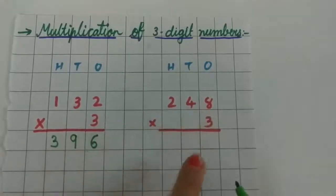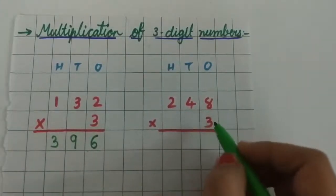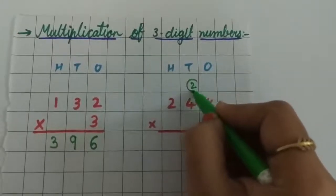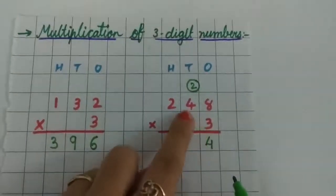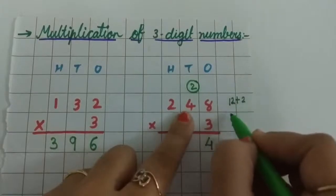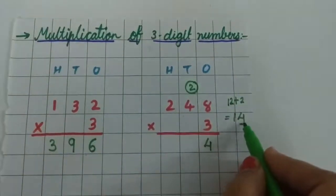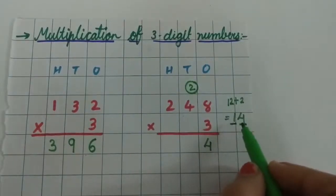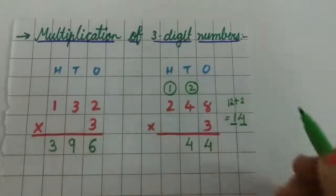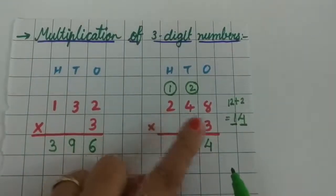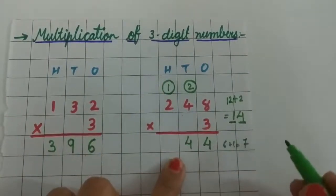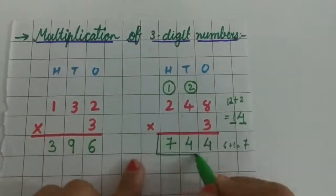Next, 248 multiply by 3. 3 eights are 24. So write 4 below the 1's place column and carry over 2. 3 fours are 12, plus 2 is 14. Write 4 below the 10's place column and carry over 1. 3 twos are 6, plus 1 is 7. Write 7 below the 100's place column. Our answer is 744.